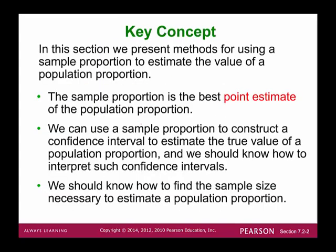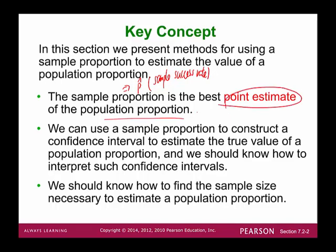In this section, we will use a sample proportion. I typically use p-hat to represent a sample proportion — it's the sample success rate. It's the best point estimate of the population proportion. Population proportion uses capital letter P, representing the population success rate.